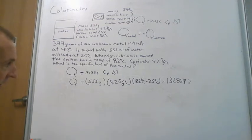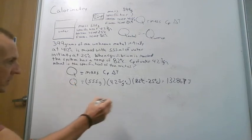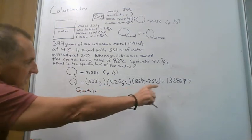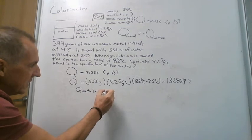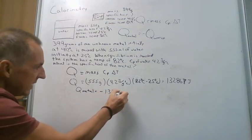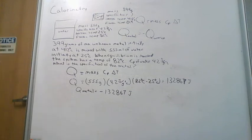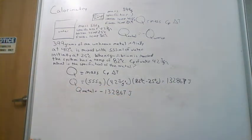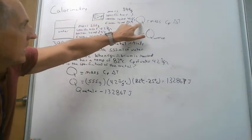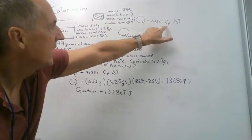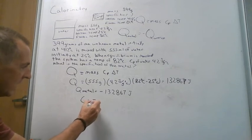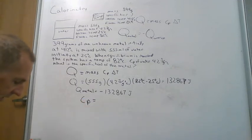The Q of the metal is equal to the Q of the water but opposite in sign. So the metal has a heat change of negative 132,867 joules — the metal gave up that much heat, and the water absorbed it. Now for the metal, I know Q, I know the mass, and I know the change in temperature. What I don't know is the specific heat. So I rearrange the equation: specific heat equals Q divided by mass times change in temperature.